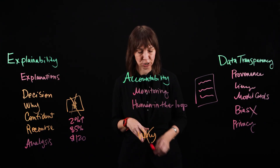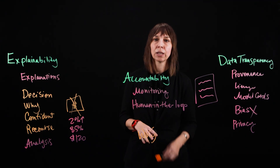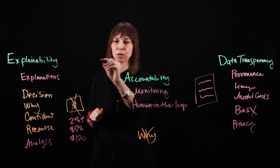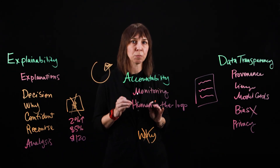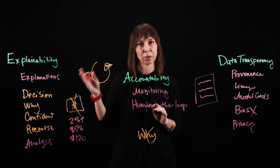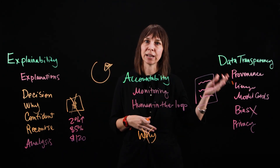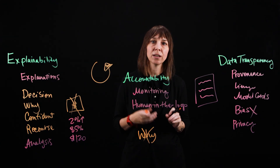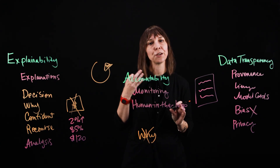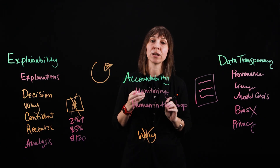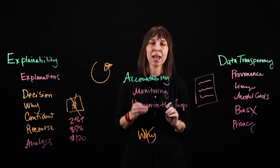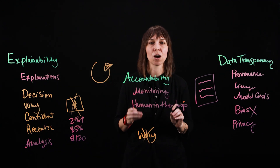Transparency isn't a feature — it's a system. With systems in place for explainability, accountability, and data transparency, you can take your AI agents from black boxes to agents that users can understand and use with confidence.